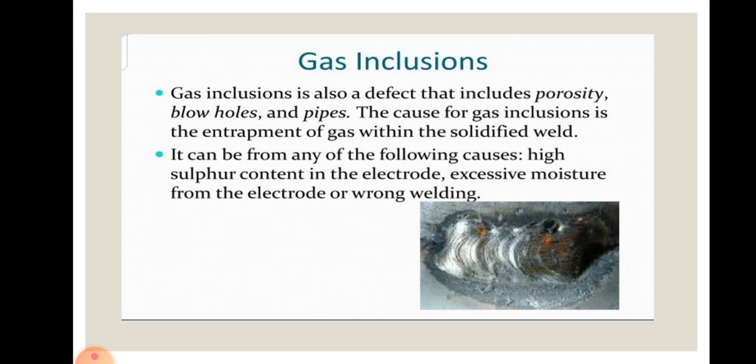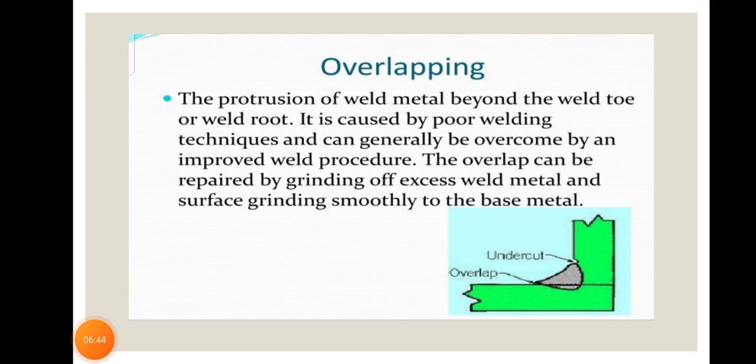Next welding defect is overlapping. This defect arises when molten metal from the electrode flows over the base metal surface and remains there without getting properly fused. The causes are slow arc travel speed, improper joint geometry, and low arc current.